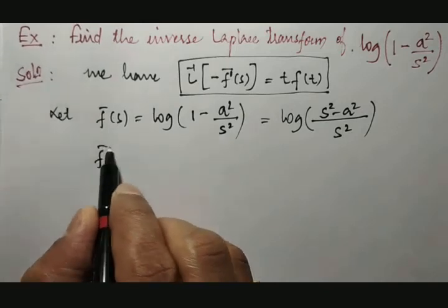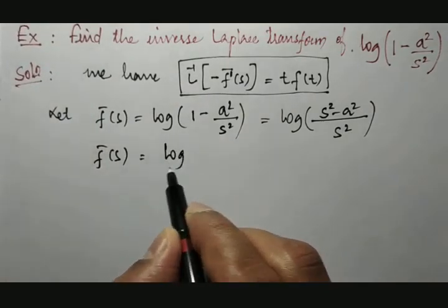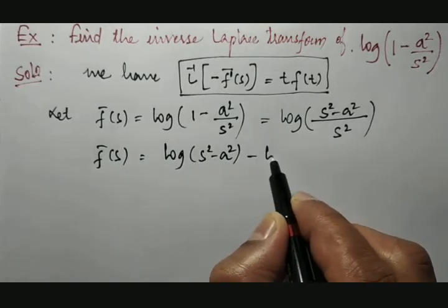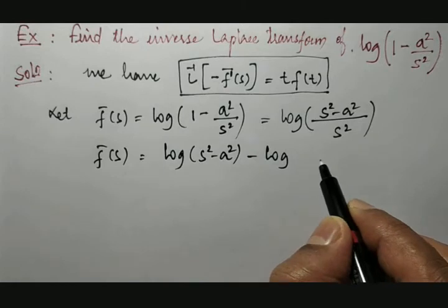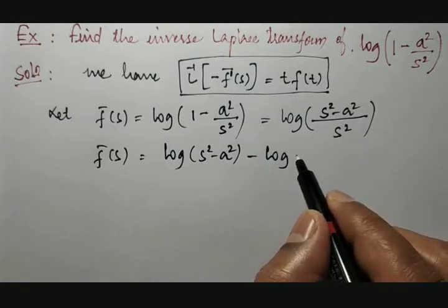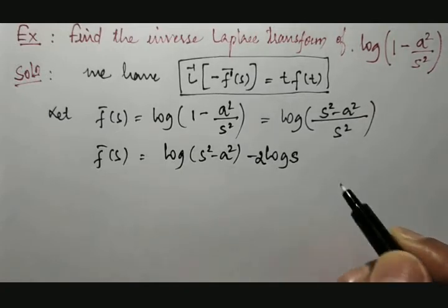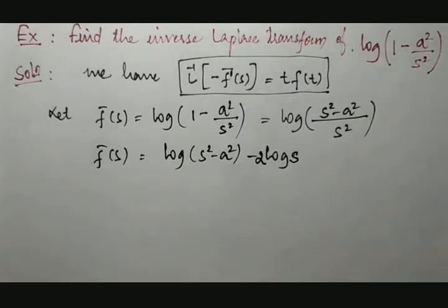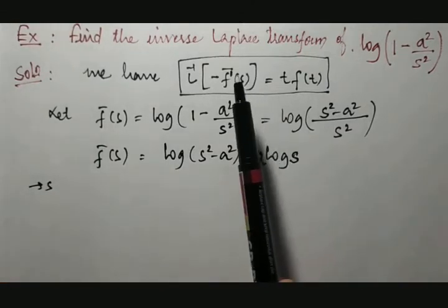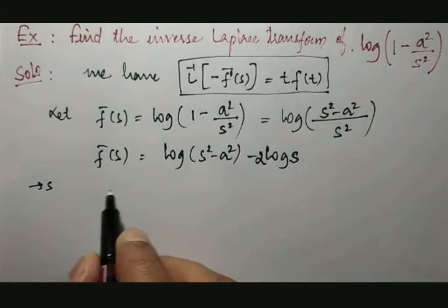Now we can apply the logarithm property. As per the logarithm property, it becomes logarithm of s-squared minus a-squared, minus logarithm of s-squared. Applying the log of s-squared, the power becomes a multiplier, so it is 2 times log s. Then we differentiate this with respect to s to get f-bar-dash of s.